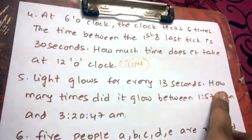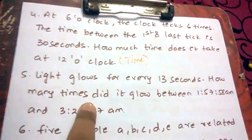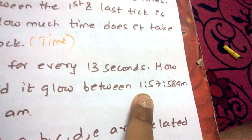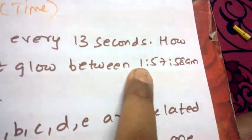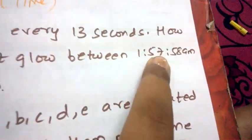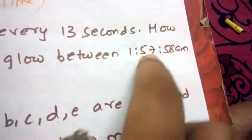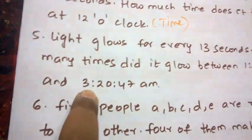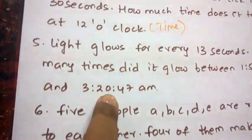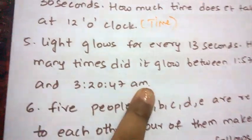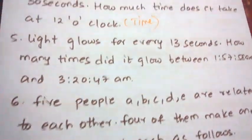Next question: A light glows for every 13 seconds. How many times did the light glow between 1 hour 57 minutes 58 seconds AM and 3 hours 20 minutes 47 seconds AM?